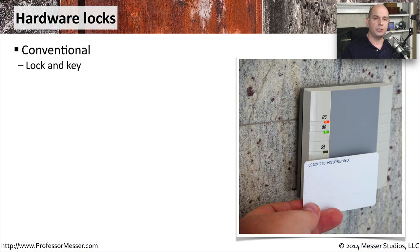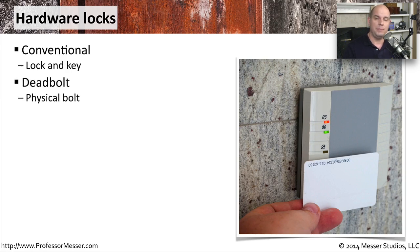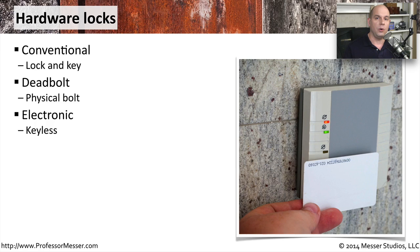Let's begin our discussion of physical security with a type of security we're very familiar with: a hardware lock. It can be something like a conventional lock and key on a door, or it can be a deadbolt, which is a broader, more physically restraining lock. Many doors in enterprises don't use keys — they use electronic means to unlock the door, usually associated with a central database that only allows the right people in based on the card or identification information provided.